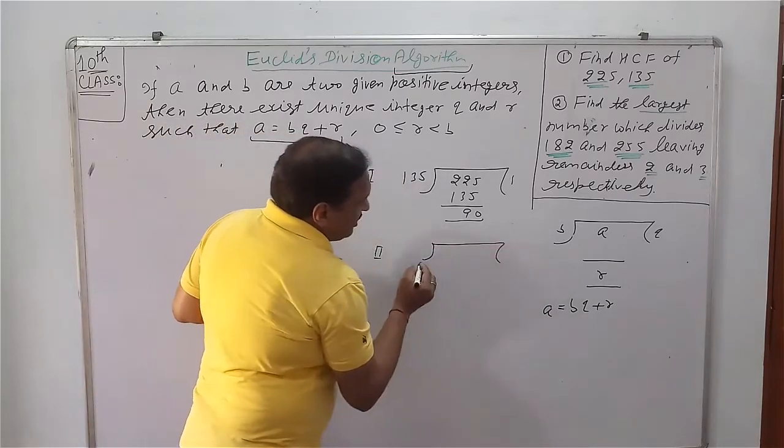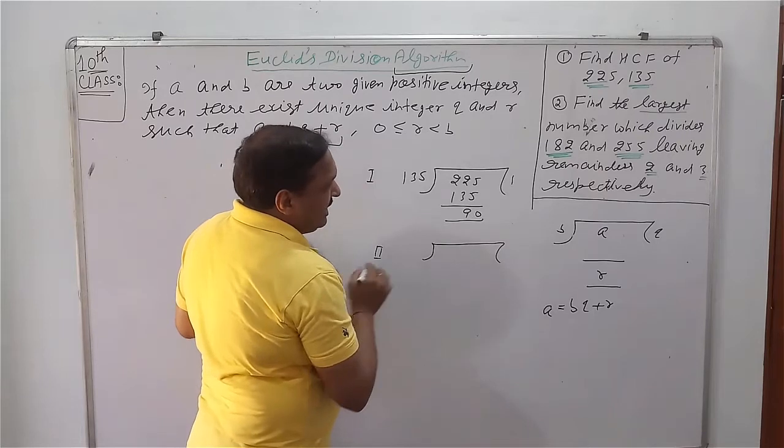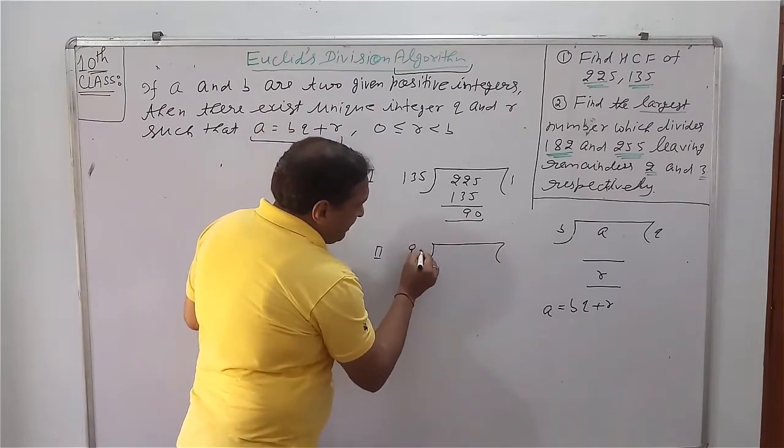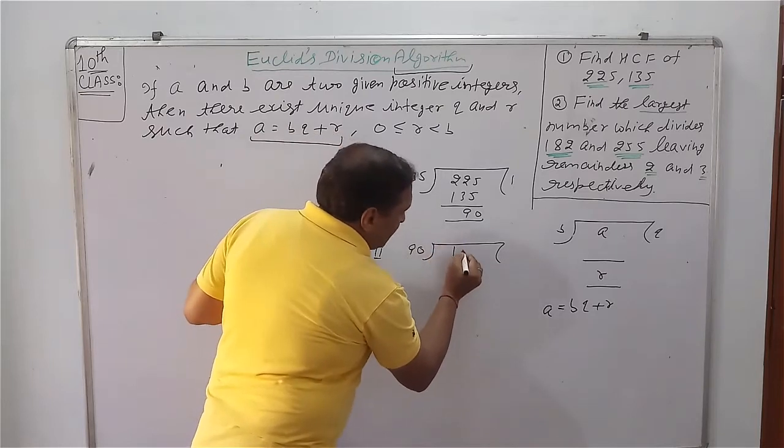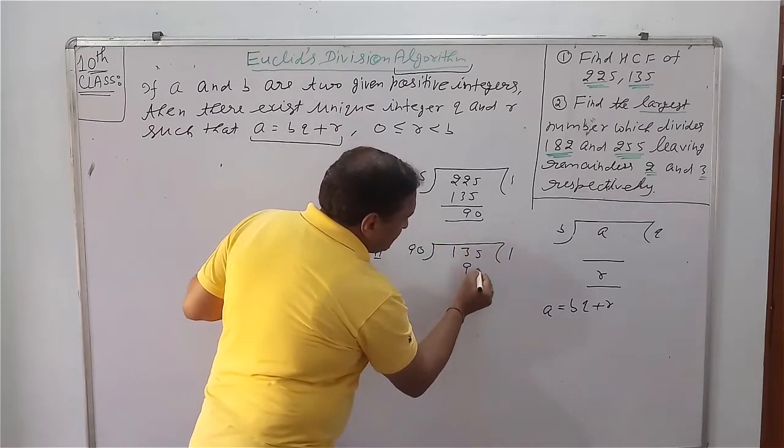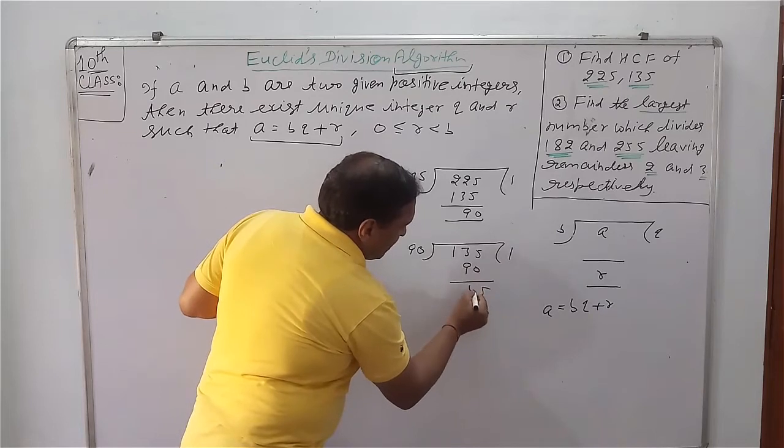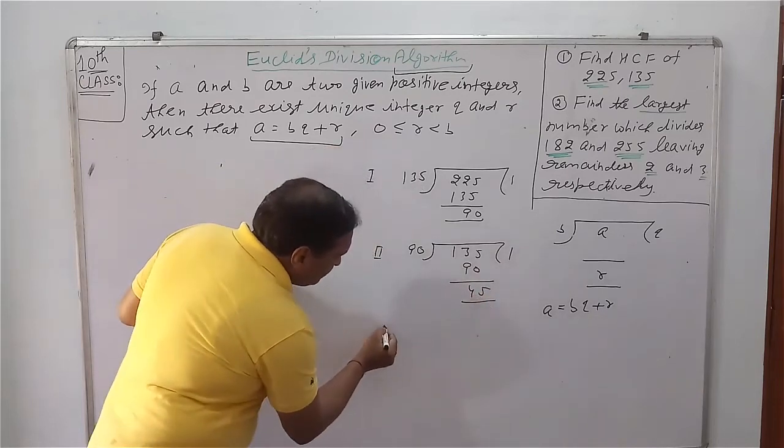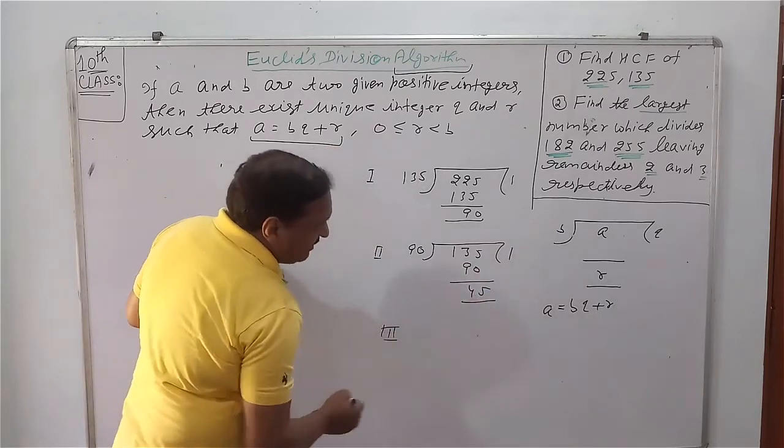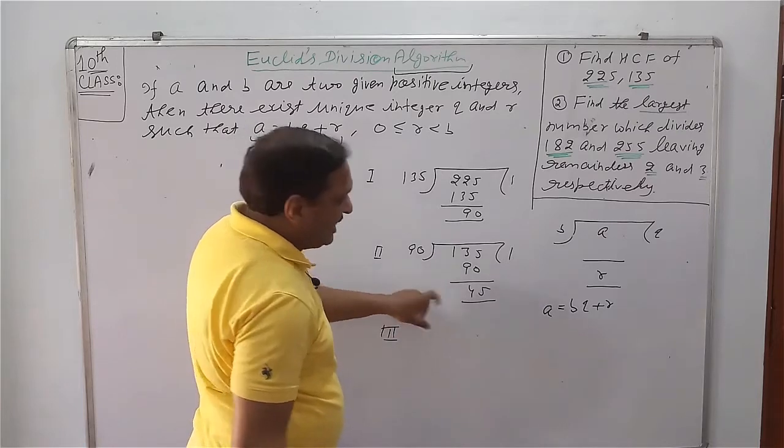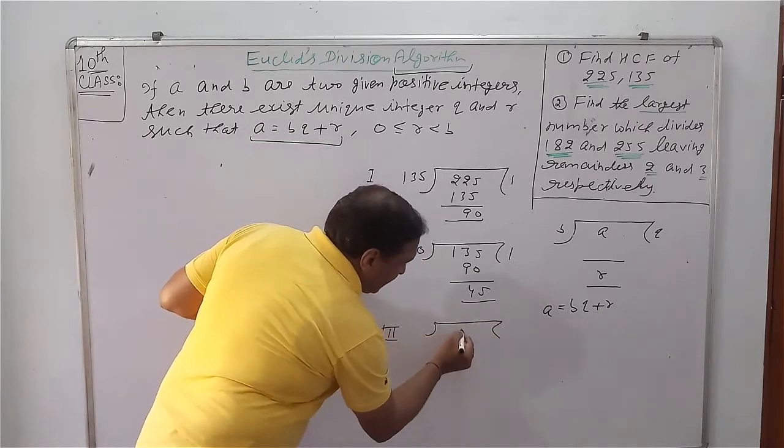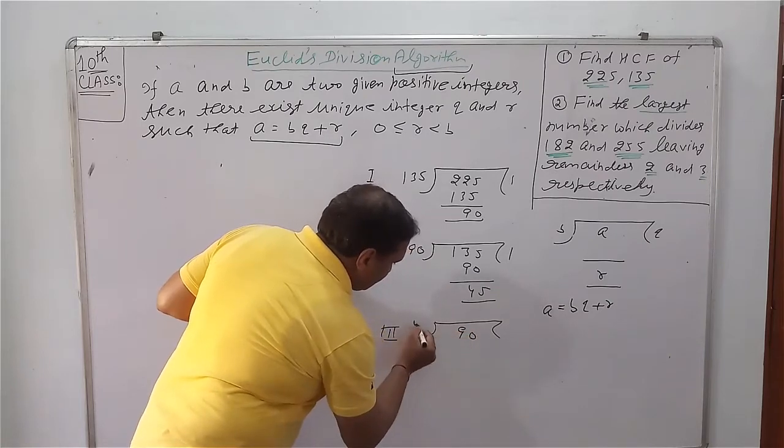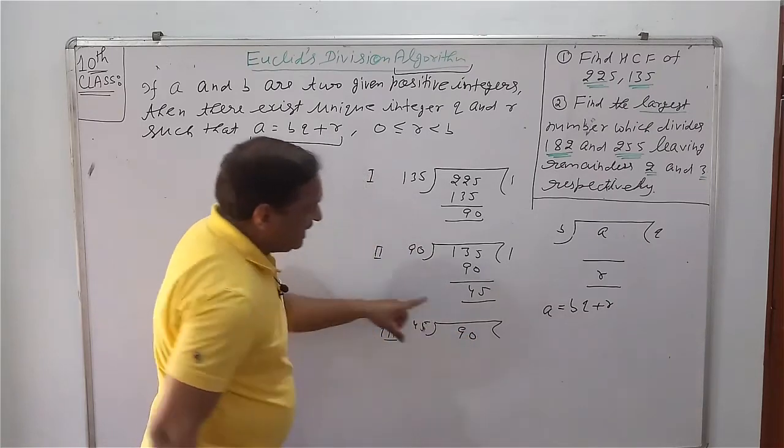You have learned long division method. The remainder is divisor and the previous divisor becomes dividend. Again 1, remainder is 45.